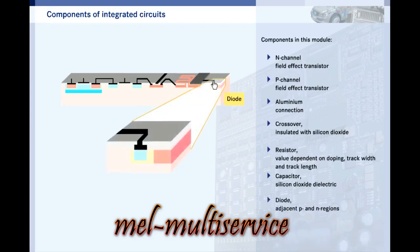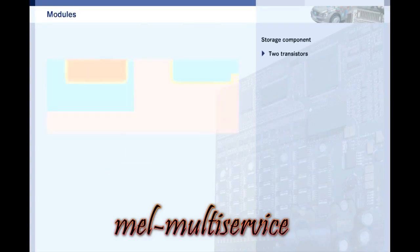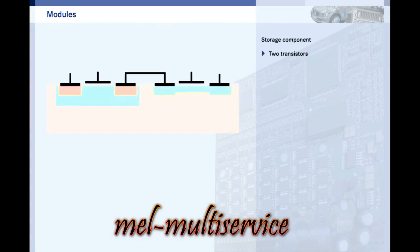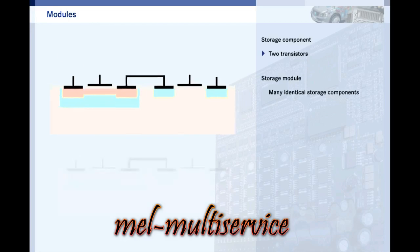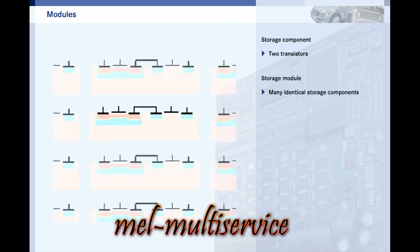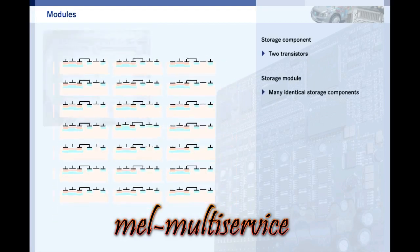Diodes consist of two adjacent N-type and P-type regions. A changeover switch can be constructed from just two complementary field effect transistors. This is the simplest kind of data storage element — either one transistor or the other is turned on. Storage modules consist of many of these elements.